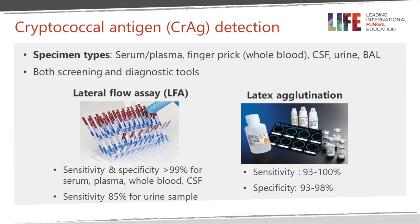The sensitivity with latex agglutination is between 93 and 100 percent and specificity is quite high at 93 to 98 percent. The lateral flow assays, principally done in HIV patients, are at least 99 percent sensitive and highly specific as well, and those figures relate to serum, plasma, whole blood and spinal fluid. In urine the sensitivity is about 85 percent.